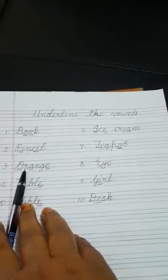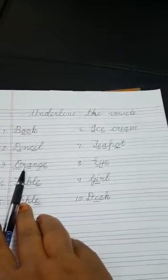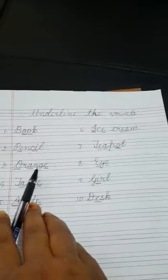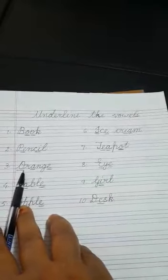Now next is orange. So it is O, R, A, N, G, E. So what are the vowels over here? O, A and E.